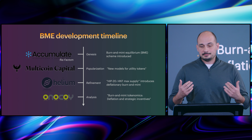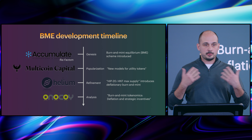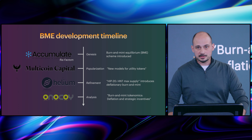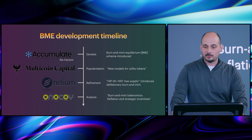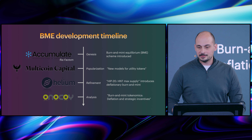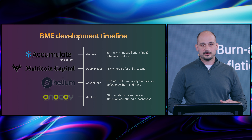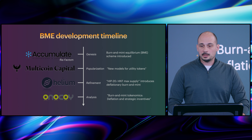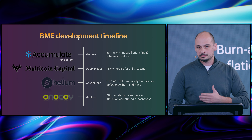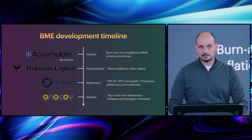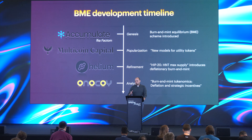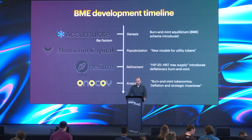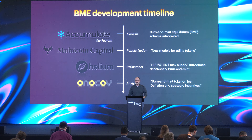That brings us to today, which is analysis. At Onakoi, we've provided analysis — we're the scientists taking credit for all the work done before us, as Newton and Leibniz might say. Basically, this work is a peer-reviewed paper published on IEEE Xplore called 'Burn and Mint Tokenomics: Deflation and Strategic Incentives.' We've analyzed burn and mint from a strategic, game-theoretic standpoint — what's the optimal strategy of token holders?